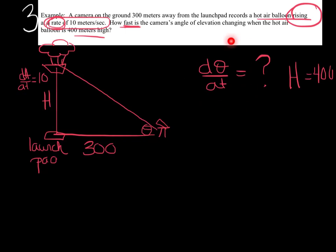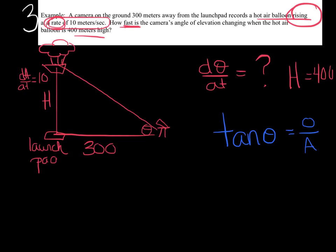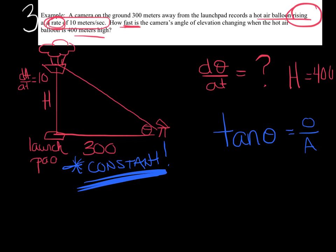I need to determine which trig function to use. I don't know anything about the hypotenuse, so I'll avoid that. I know the adjacent side is a constant and I know the opposite side has a rate of 10 labeled H. So I'll go with tangent: tan θ = opposite/adjacent. Can I plug anything in? The camera and launch pad distance will never change — that's a constant. So tan θ = H/300.